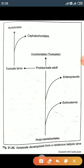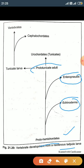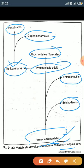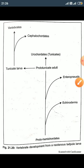The proto-hemichordates are derived from the neotonic tornaria larva. From this ancestor, echinoderms first evolved, then enteropneusta formed. From enteropneusta, proto-tunicates developed; one branch led to tunicate larvae, and another gave rise to urochordates. The tunicate larvae eventually developed into vertebrates, and few developed into cephalochordates. Thus, hemichordates are the ancestors from which all chordates derived their formation.